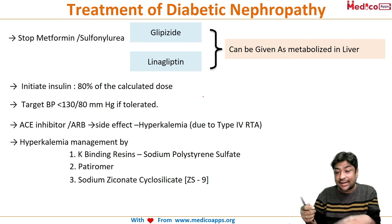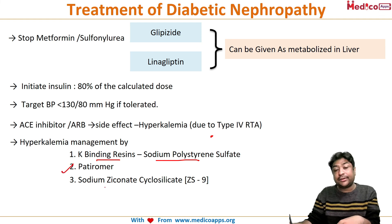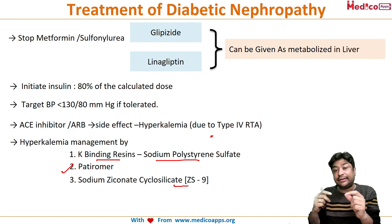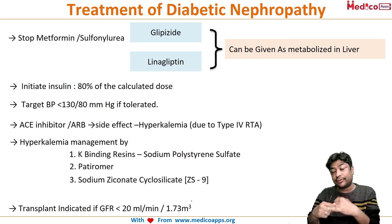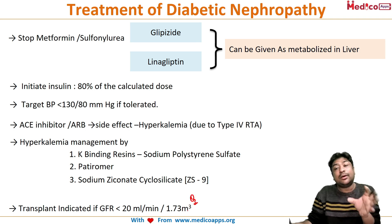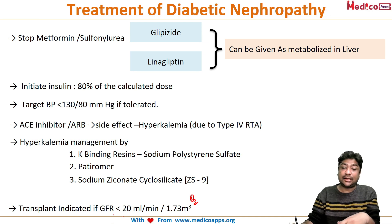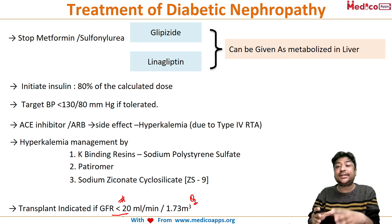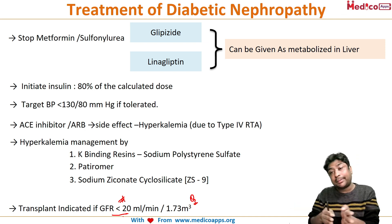If hyperkalemia develops, it can be managed with potassium-binding resins like sodium polystyrene sulfate, patiromer, or sodium zirconium cyclosilicate (ZS9). If the GFR falls below 20 mL/min/1.73 m², this becomes an indication for renal transplantation in diabetic nephropathy — a common exam MCQ point. The cornerstone of management remains glycemic control, targeting HbA1c below 7 to delay nephropathy.